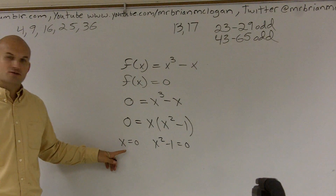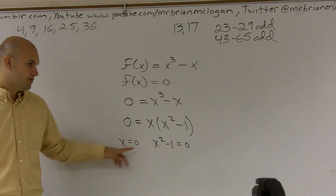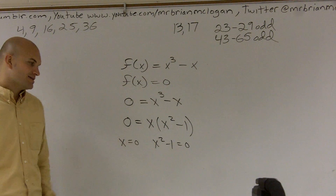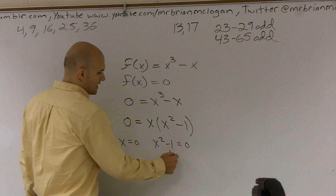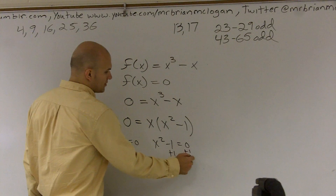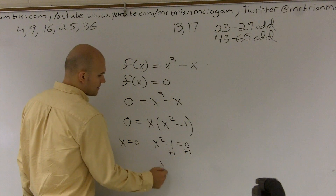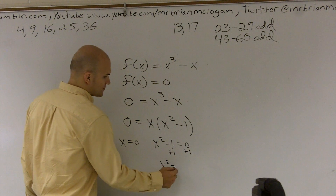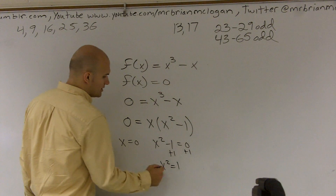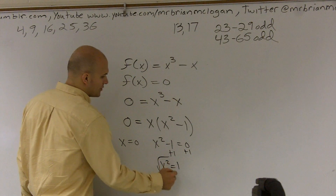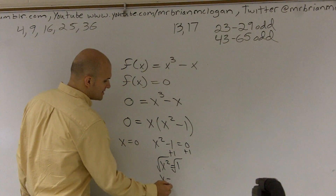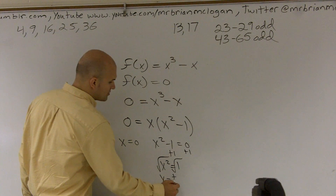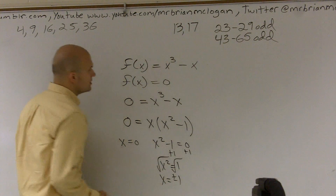Therefore, one linear factor is going to be 0. For the rest, I'm going to have to solve for x. I'll add 1 on both sides and have x squared equals 1. Taking the square root, therefore I have x equals plus or minus 1.